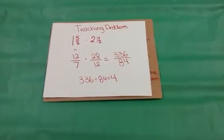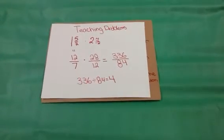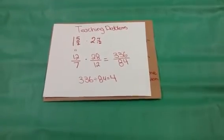Then, you divide it which is 336 divided by 84 which equals a whole number of 4.